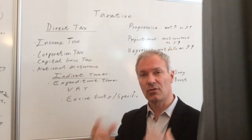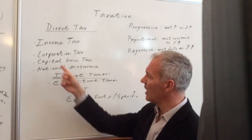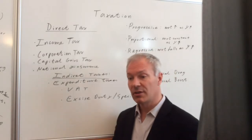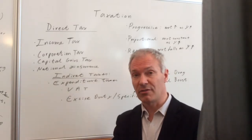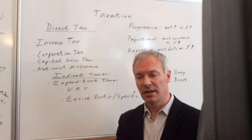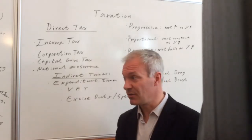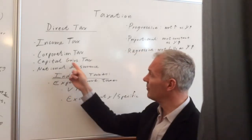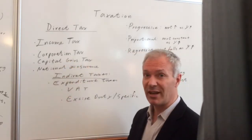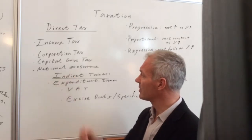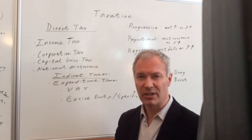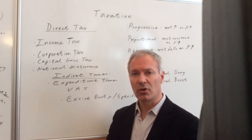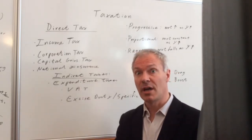Corporation tax is a tax on corporate profits. Capital gains tax is a tax on the capital gain that an investor might make. So say you buy a business for £100,000 or property, and then you sell it a year's time for £150,000 — you've made £50,000, and the state will take some of that capital gain from you. Another tax, which is really like a different form of income tax, is national insurance — a tax on employment paid by both the employer and the employee.